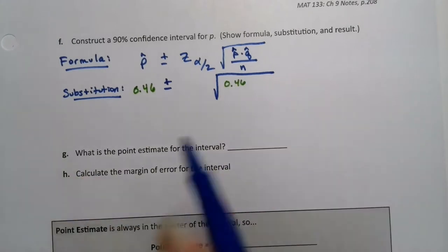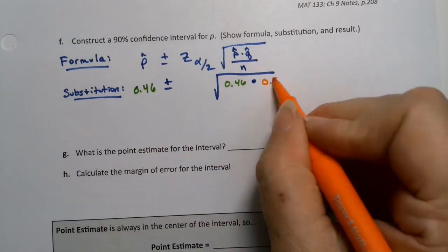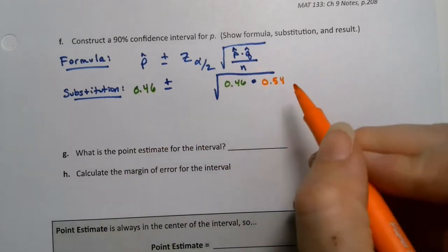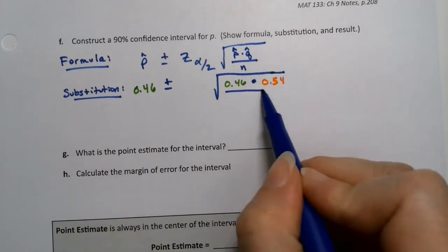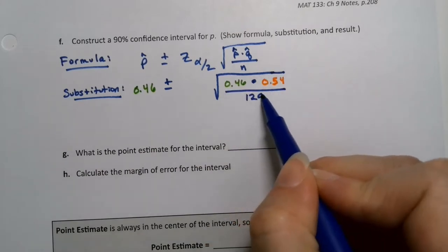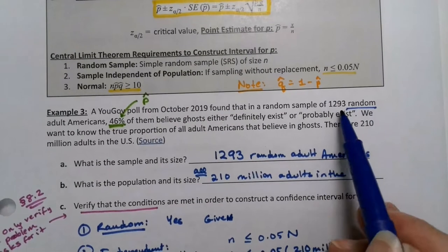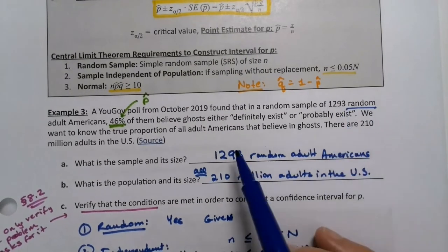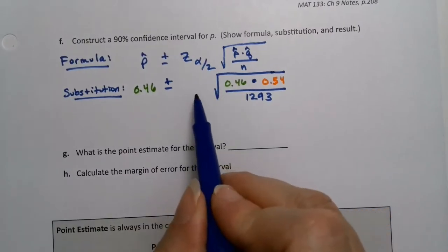And that P hat right there is 0.46, and I'm going to multiply it by the complement of P hat, which is Q hat, right? And we already figured that out. That's 0.54. And then we're going to divide by N. N was 1,293, if I'm not mistaken. I did that from memory and I didn't look. Yes, it's right there. So N was 1,293. So that's great. And that just leaves me the Z.